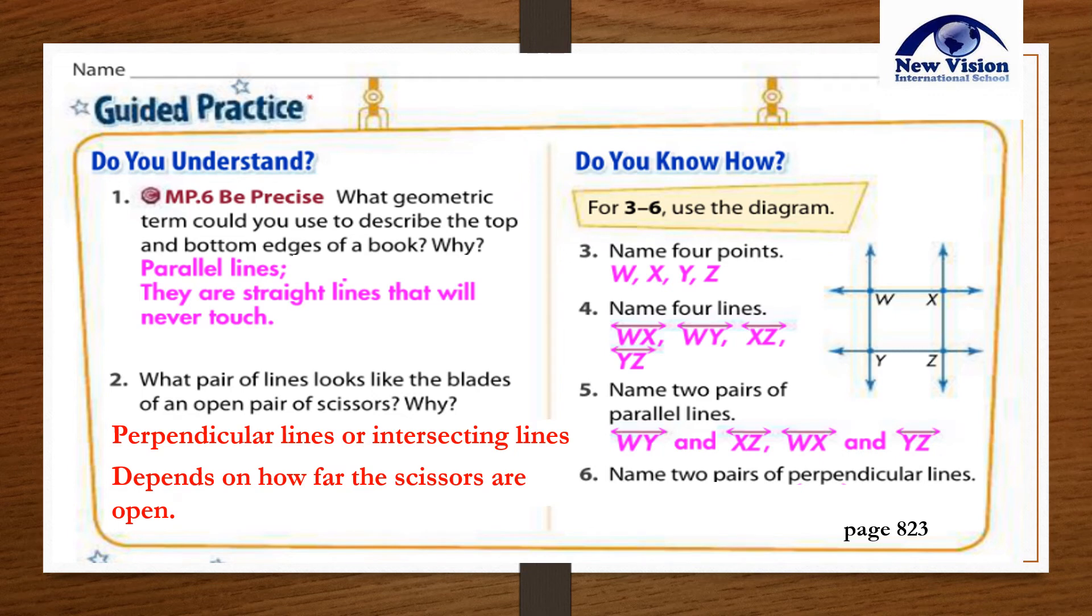Number six: Name two pairs of perpendicular lines. Answer: Line WY and line WX. Another pair: Line WX and line XZ.